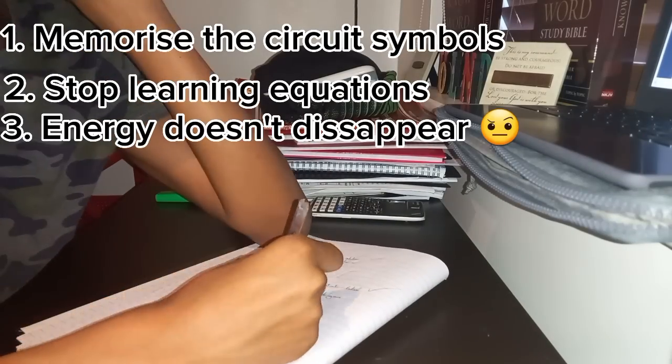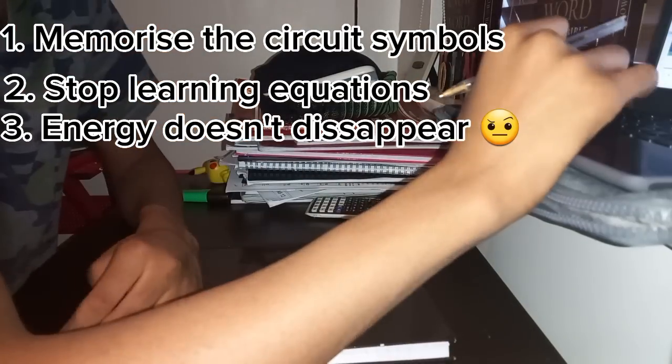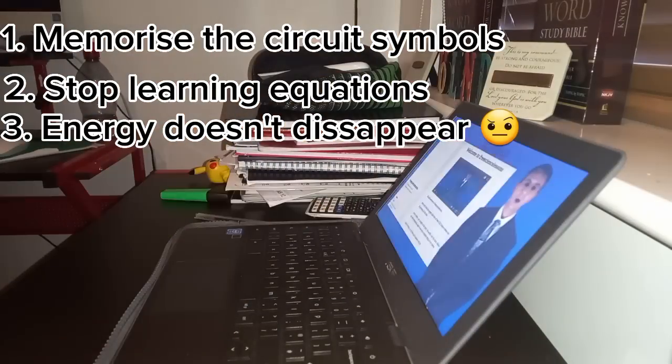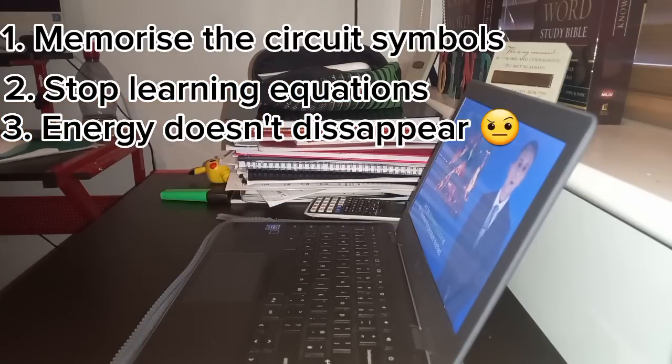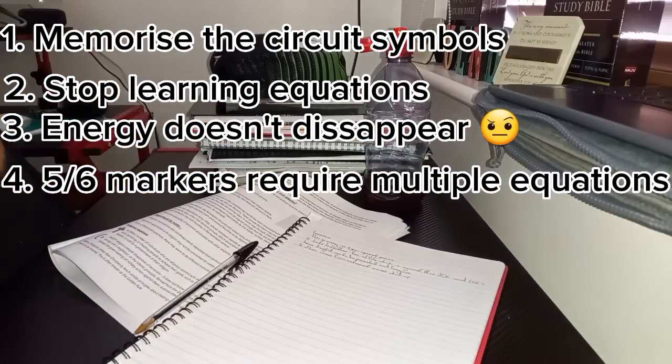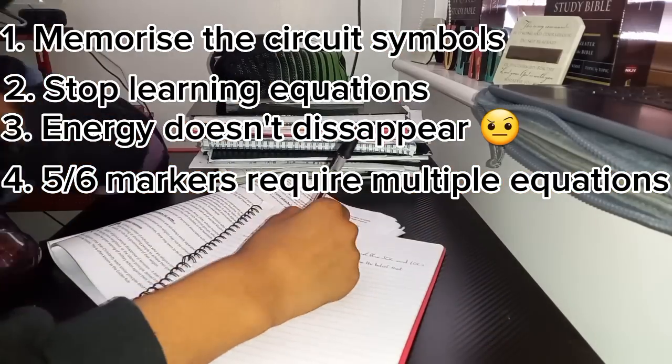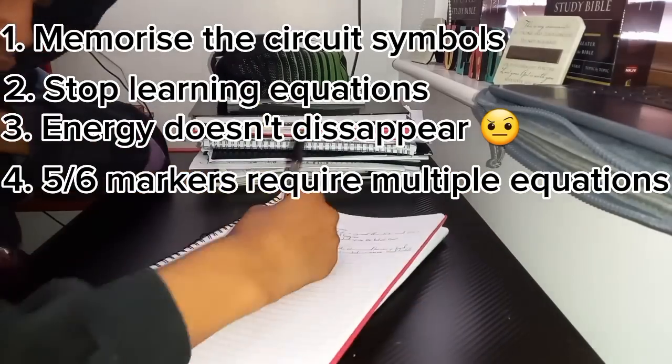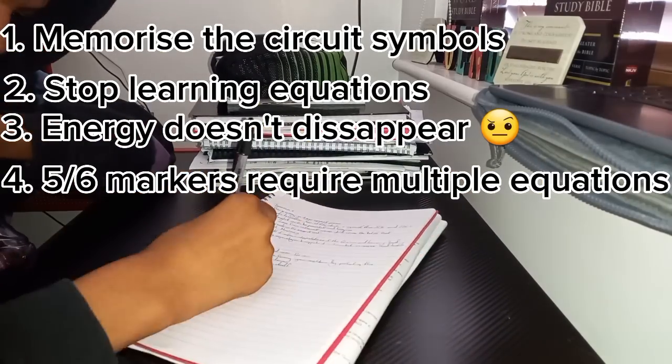Also, for the five and six markers in physics that have anything to do with maths, you need to keep in mind that you're going to be using not just one equation, you're going to be using two or even three equations for those five and six markers. So if you're using only one equation in a maths question for physics and it's a five or six marker, you're doing something wrong and you need to look at what you're doing and try to remember any other equations that might help with the question.